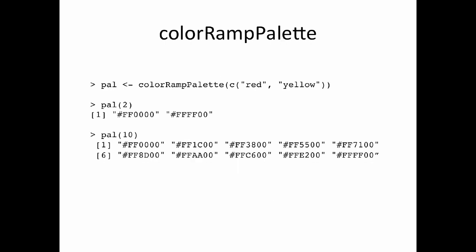That's the colorRamp function. The colorRampPalette function is very similar, but the type of function it returns is slightly different. Here I'm passing it a different palette — this one has two blotches: red and yellow. We're going to interpolate between those two colors.